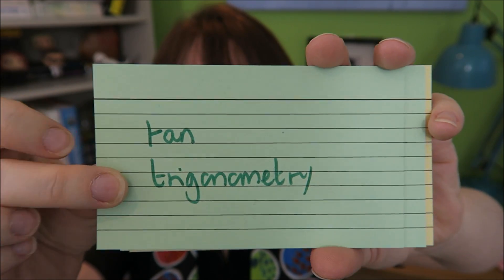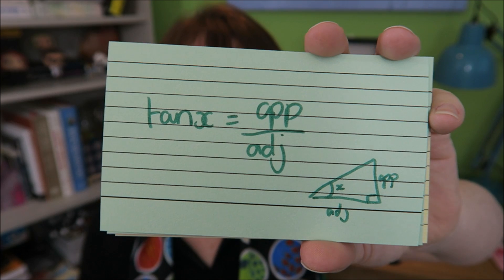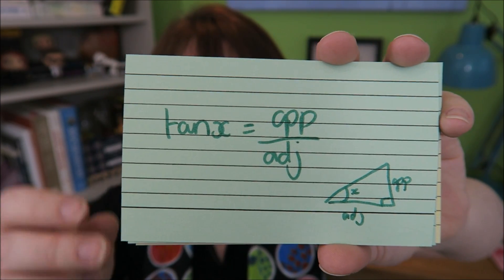The tan rule for trigonometry in a right-angled triangle. The tan X of the angle is the opposite over the adjacent.